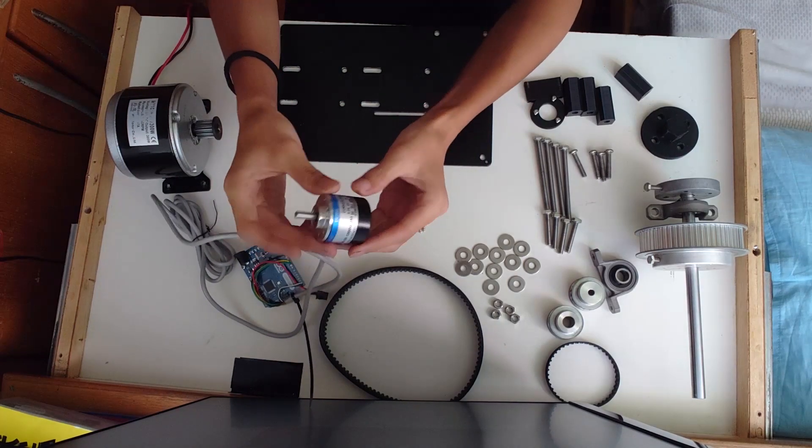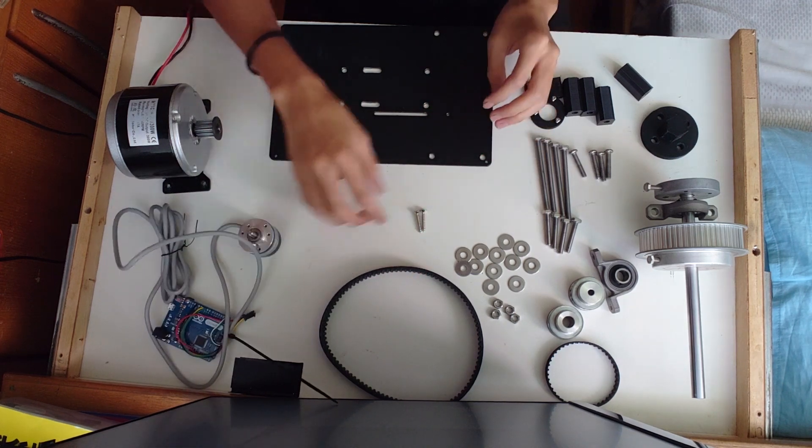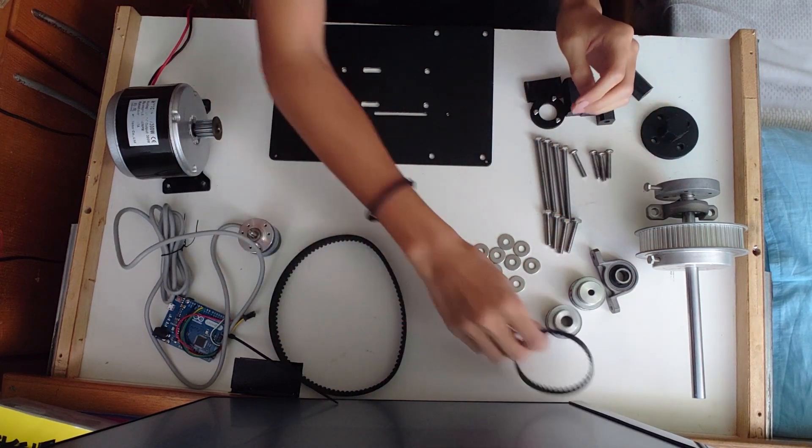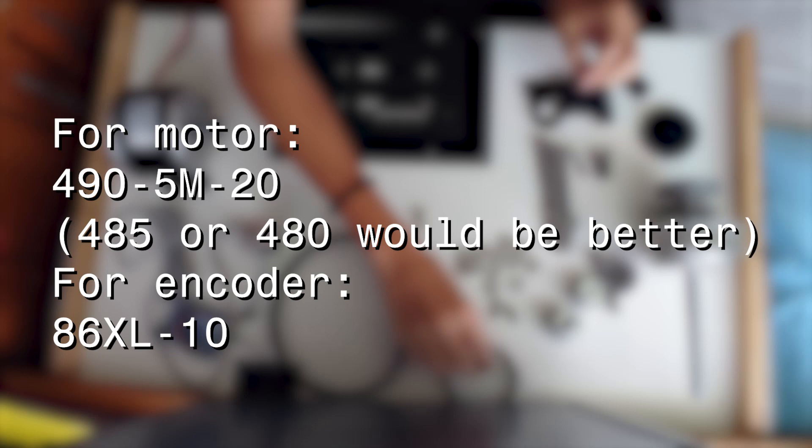Next is a 5V 1000ppr rotary encoder with a 6mm shaft. There are two timing belts: the first one is 490 5M 20 timing belt, and the second one is 86XL with 10mm wide.